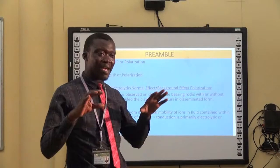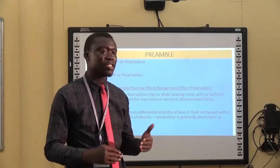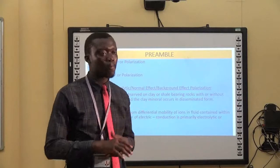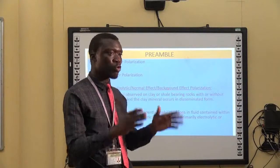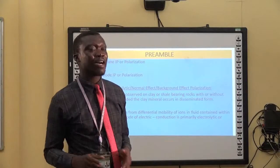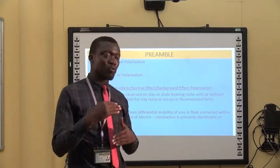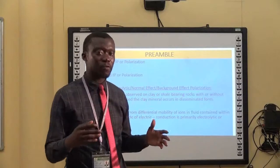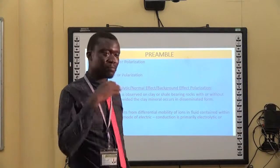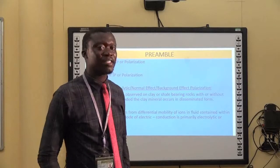The main cause of this membrane polarization is the differential mobility of ions present in fluid within the rock. If the fluid in rock has calcium ion, chloride ion, sodium ion, hydrogen, and so on, so far as the movements of these ions are different — they move at different speeds — then membrane polarization will manifest.